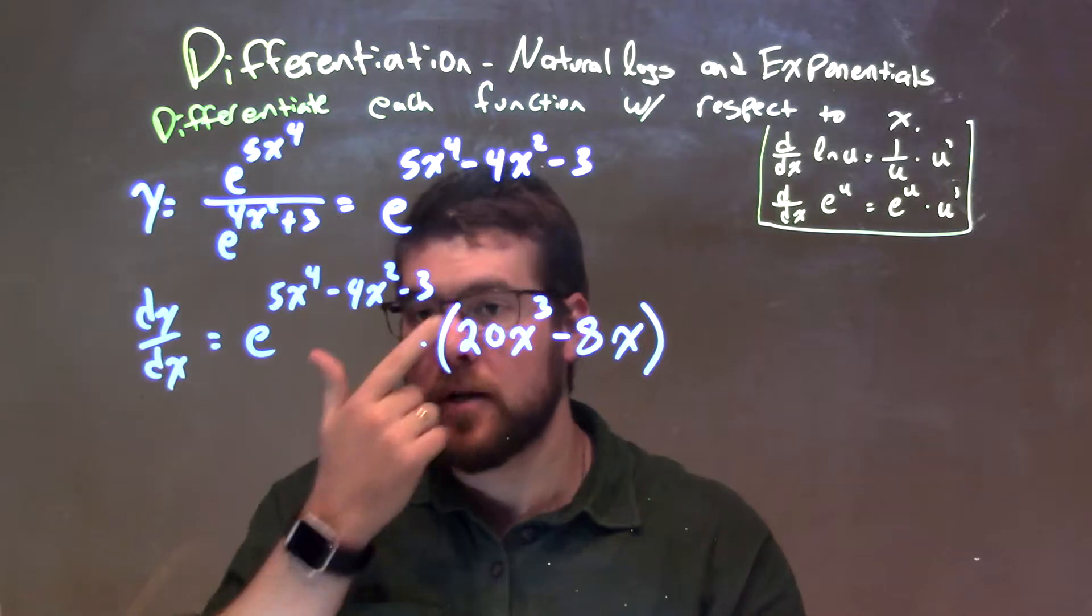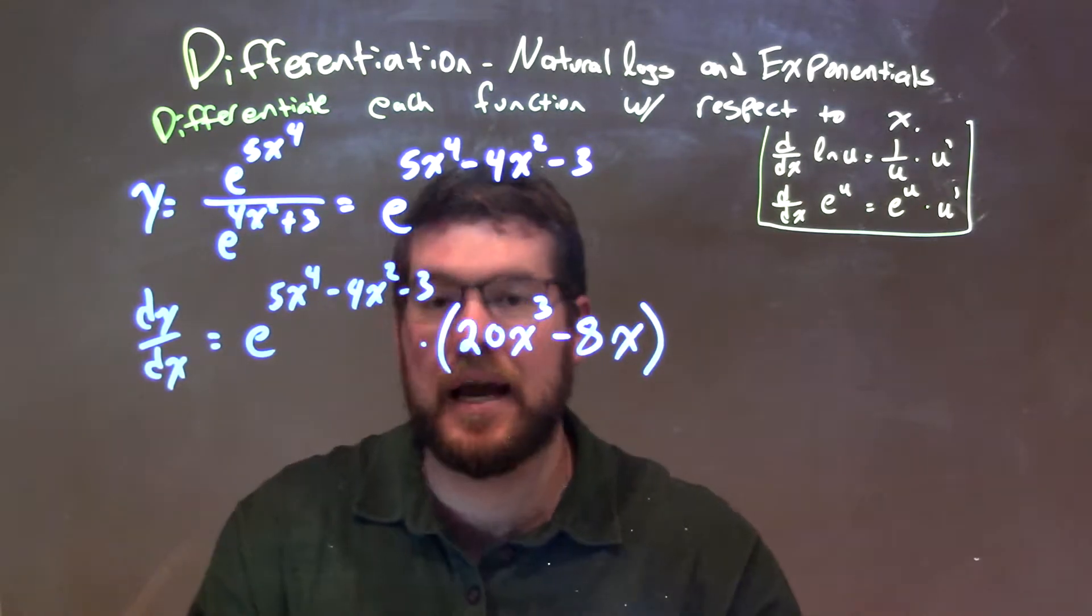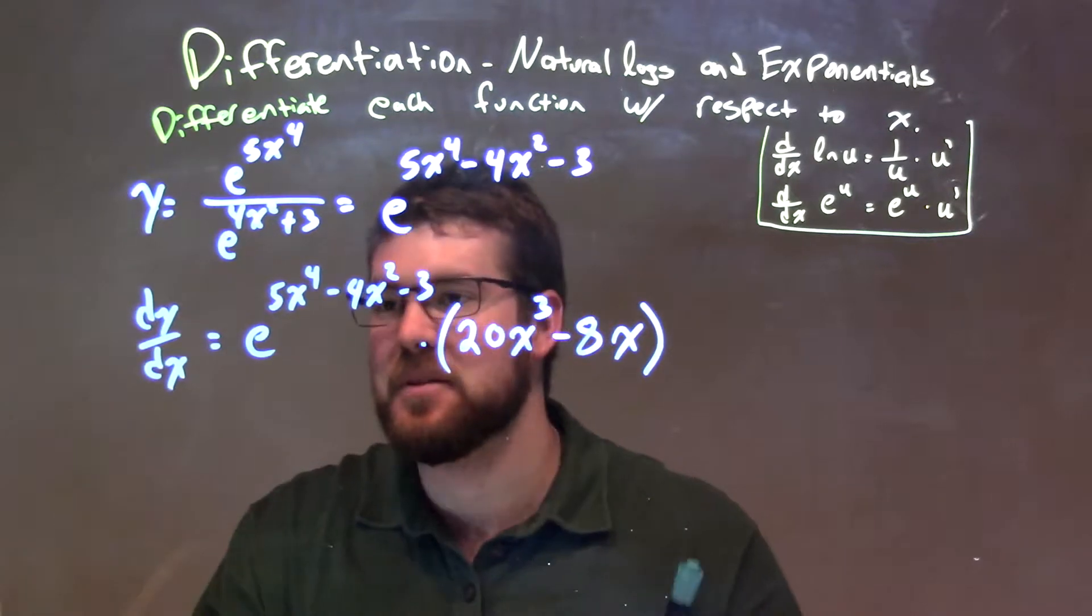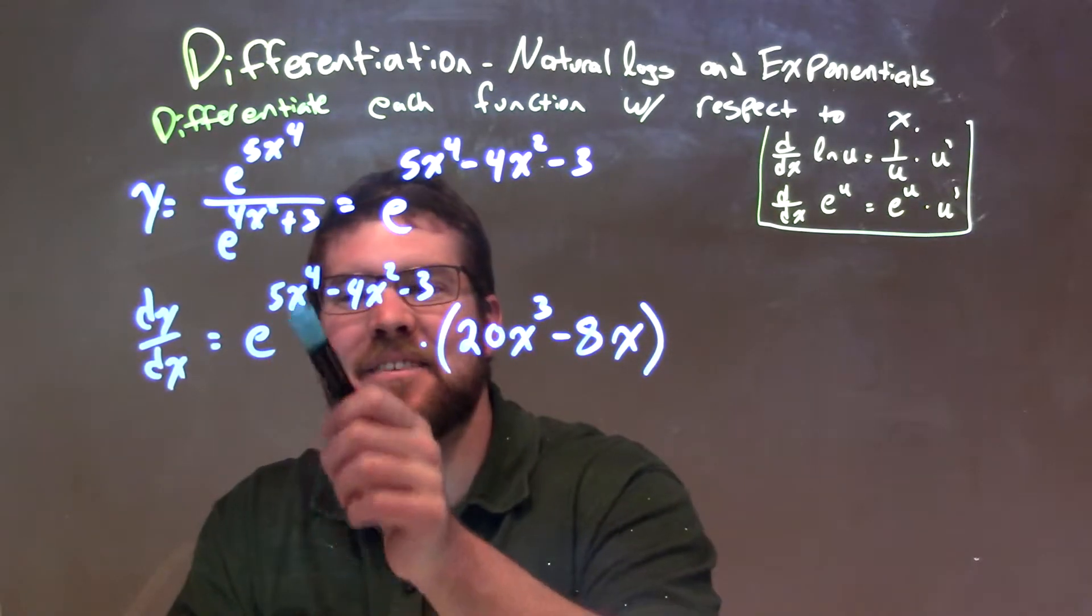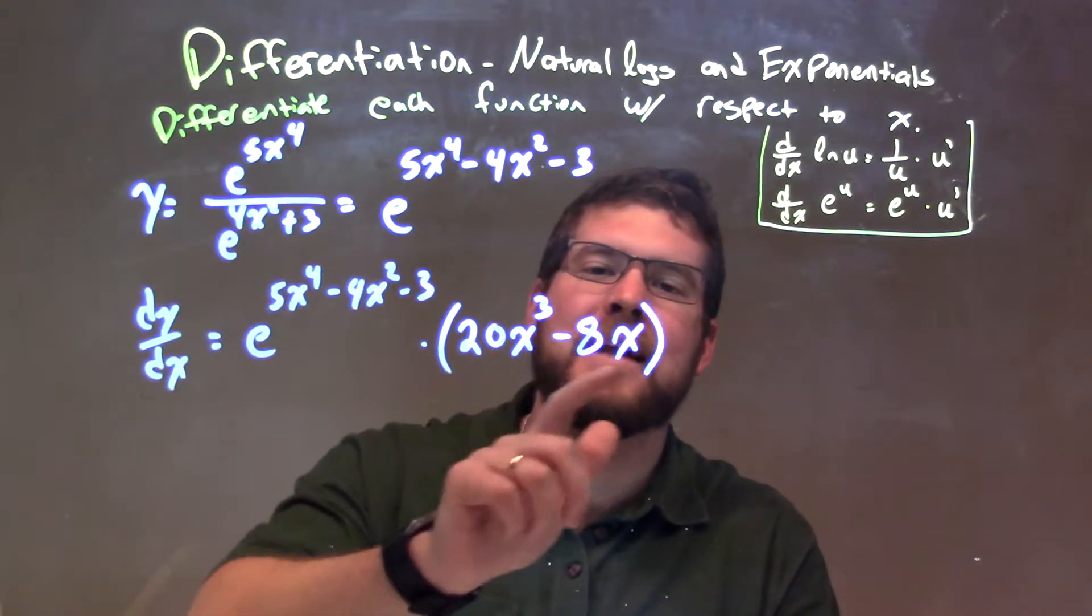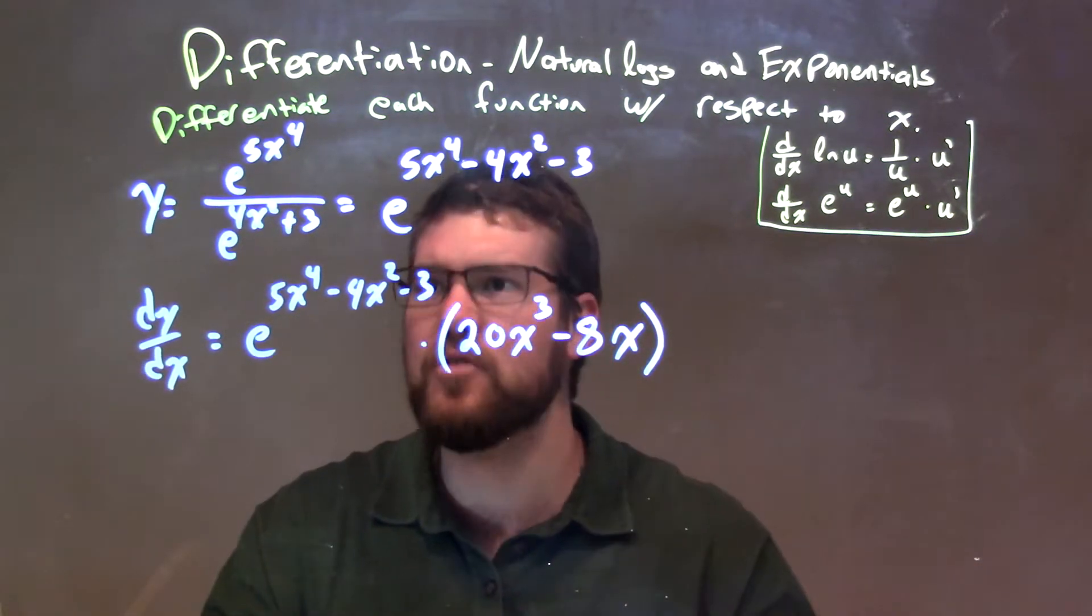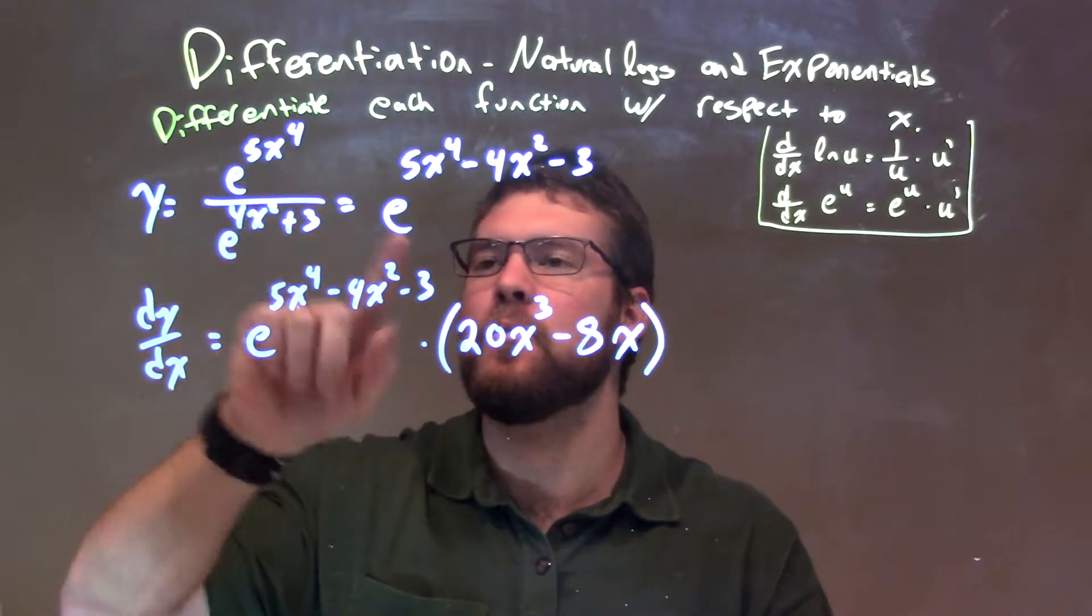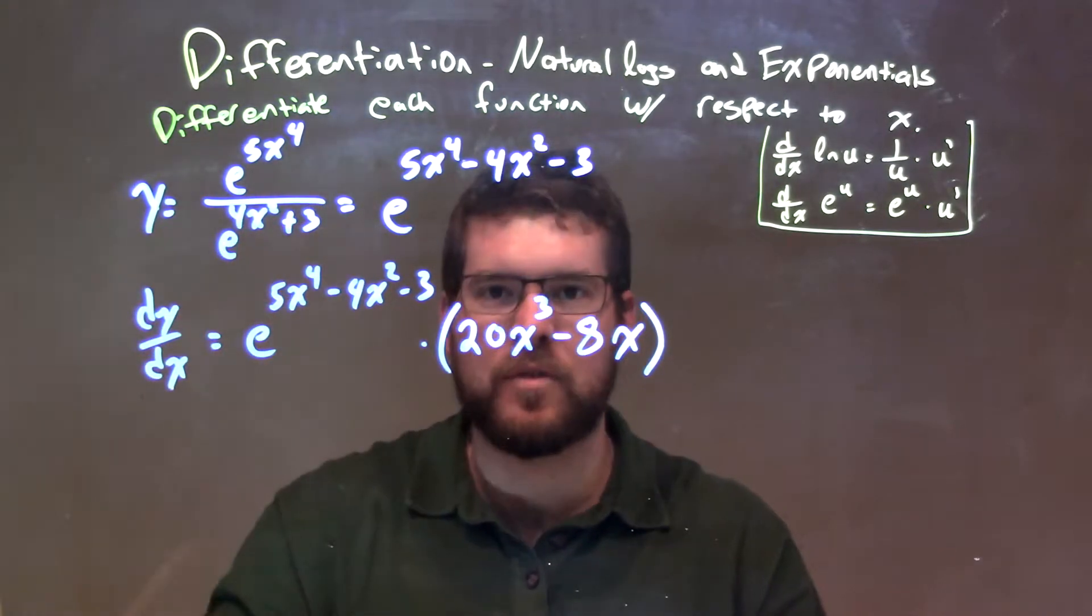At this point, I'm pretty much done. I would say it's simplified as is. Our final answer is e to the 5x to the 4th minus 4x squared minus 3 times 20x to the 3rd minus 8x. So let's recap. We have y equals e to the 5x to the 4th power over e to the 4x squared plus 3.